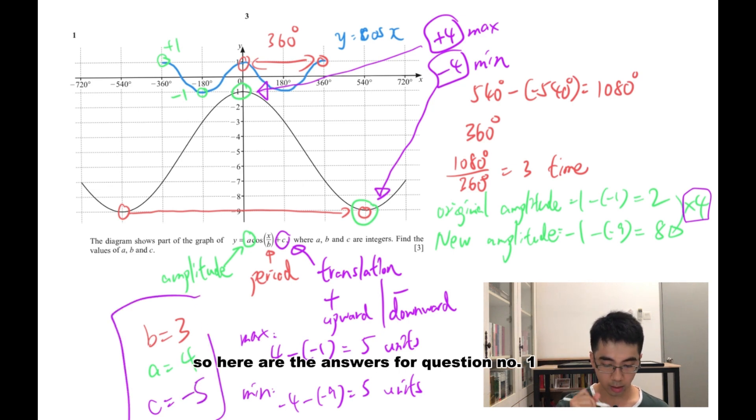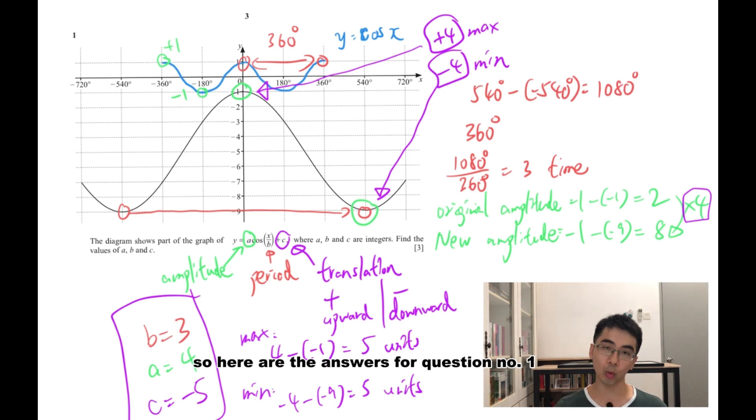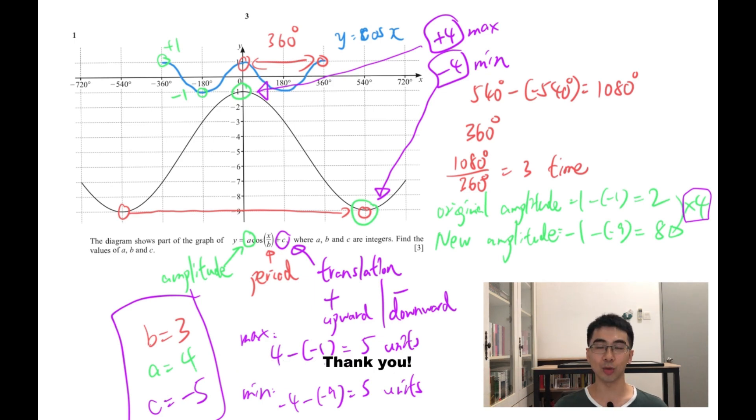So here are the answers for question number 1: a equals 4, b equals 3, and c equals negative 5.